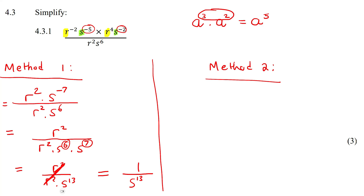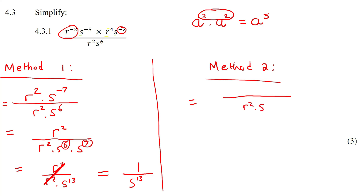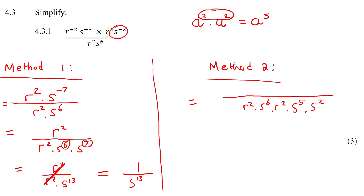With method two, I'm immediately going to take all the things that are negative and move them to a different place — you only need to do one method in the exam, I'm just showing you alternatives. So I put r^2 at the bottom. At the bottom we already have r^2 and s^6, then I put this r^2 at the bottom, this s at the bottom — it becomes positive — and also move this one to the bottom. At the top I still have r^4.